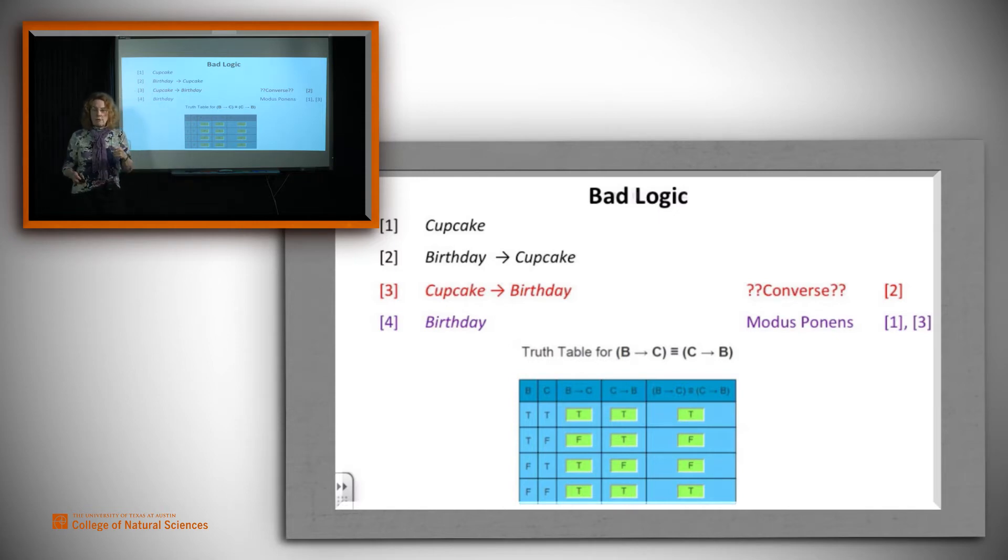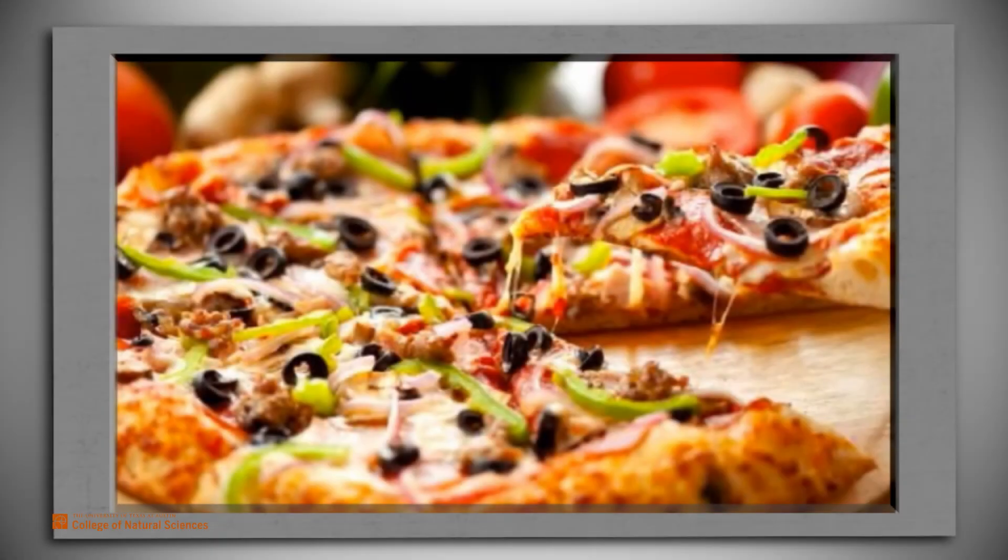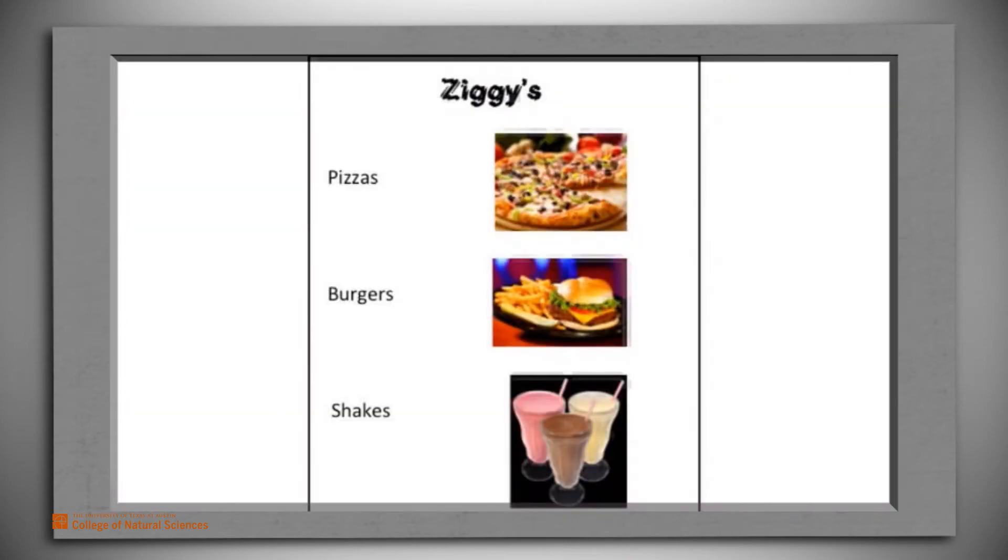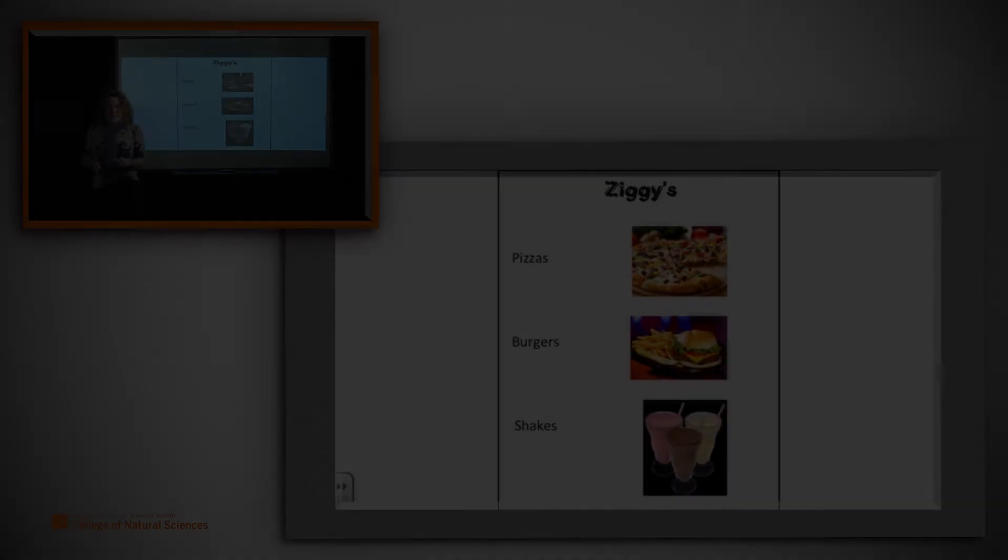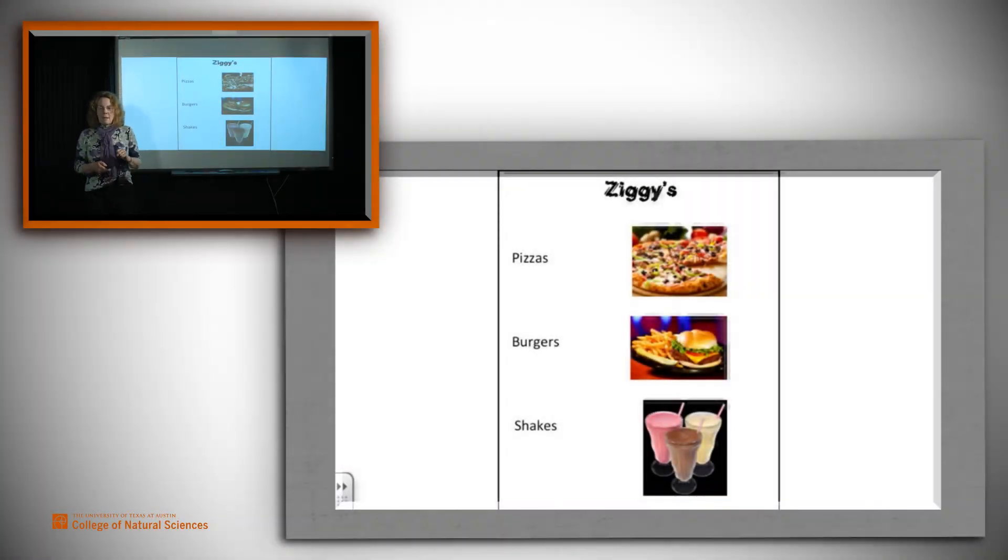All right, so converse isn't a sound rule, and if you use it, you may derive junk. Now we know why that particular mistake happened. Students who love pizza always go to Ziggy's. But I hate pizza, and you're telling me I can't go to Ziggy's. Oops, they may be getting ready to go hungry unnecessarily.